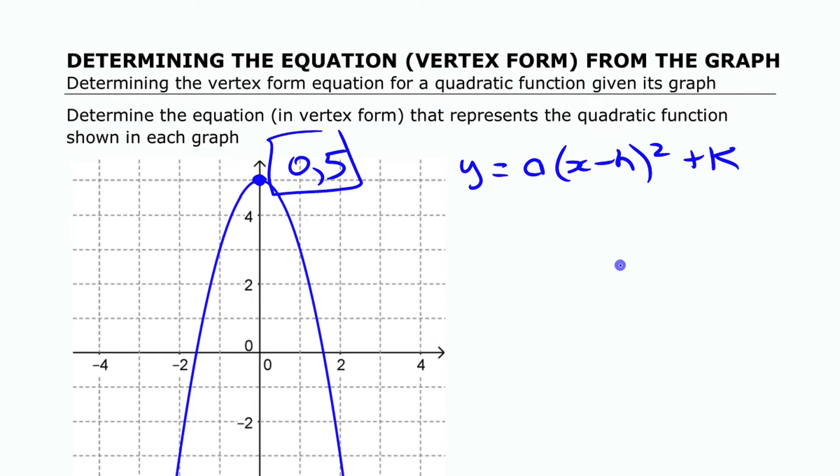So we can fill in two things right away. We can actually fill in 0 here, x minus 0 squared plus 5 on the end there. We don't know our a value yet, we're going to leave that. So actually we can just write it as ax² plus 5. Now we can go and try and find that a value.